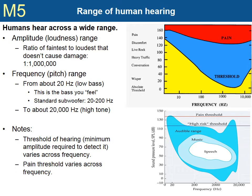Threshold refers to the absolute threshold of hearing — the lowest intensity sound that can be heard at that frequency. As you can see, the threshold changes across frequency. Low frequency bass tones require a higher amplitude to be heard, which is why there is a market for subwoofers and amplifiers. The pain threshold also changes across frequency; higher frequencies produce pain at lesser intensities than lower frequencies do. In the lower figure, you can see the normal amplitude and frequency ranges for speech and music. Notice the frequency range of speech is very wide.